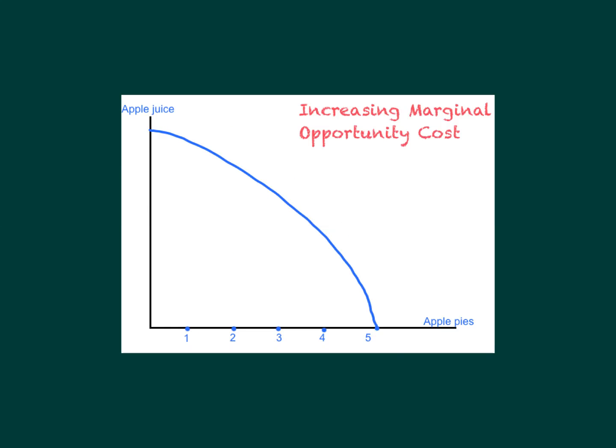Now that we know what the PPF is, let's talk about increasing marginal opportunity cost. The PPF shows us that if we start at a point where we're using all our apples to make apple juice and doing zero apple pies, then we decide to give up some apples from juice production and move them into apple pie production. To make one apple pie instead of zero, this small distance is the amount of apple juice production we're losing. We don't lose a lot when we make that first apple pie.